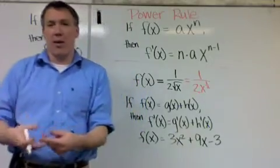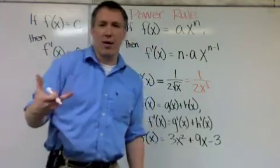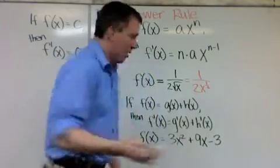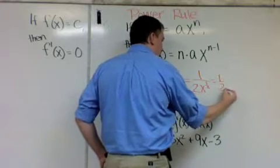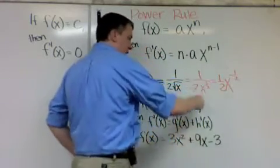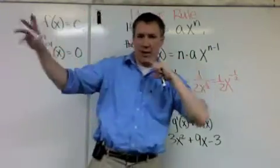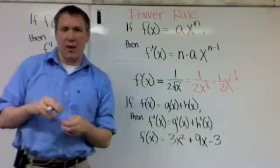But now if you also remember, if I have a power on the bottom, that's like having a power on the top with a negative. So this is like 1 half x to the negative 1 half. I still have my fraction number here, 1 half. But now x is out. It's out on the top. In this case, x to the negative 1 half.